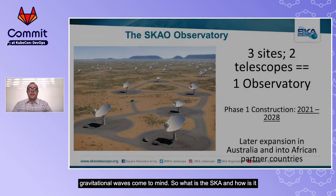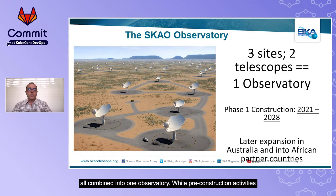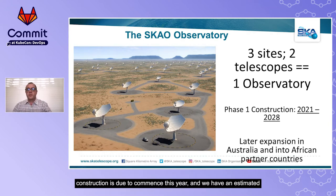So what is the SKAO and how is it built? The SKAO consists of three sites and two telescopes, all combined into one observatory. While pre-construction activities have been underway for a number of years, the official launch of construction is due to commence this year, with an estimated completion date and things coming online in 2028.